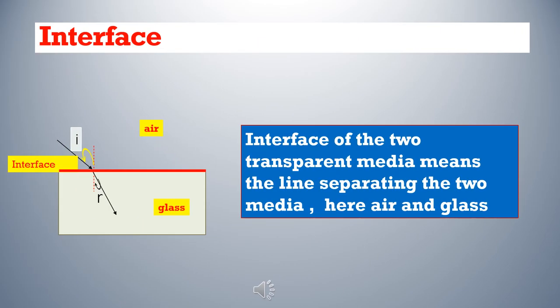What do you mean by interface? Here you can see two media – glass and air. In the previous case it was air and water. There is a line separating these two media, shown here in red color. This line which separates the two media is known as the interface. So the interface of two transparent media means the line separating the two media, here air and glass.